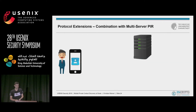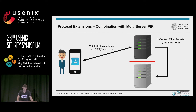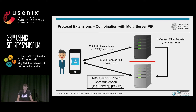In the paper, we suggest multiple extensions to further reduce communication. One extension is a combination with multi-server private information retrieval. First, the main server transfers the cuckoo filter to a second non-colluding server — and importantly, the trust assumptions are not as strong as in other protocols because the cuckoo filter contains only encrypted elements, so even in the case of collusion the security level is still better than the best currently deployed methods. The client then runs OPRF evaluations with the main server and uses a multi-server PIR lookup to check contact existence. Most importantly, the total client-server communication is reduced to be logarithmic in the size of the server database, making this practical even for services with more than a billion users.